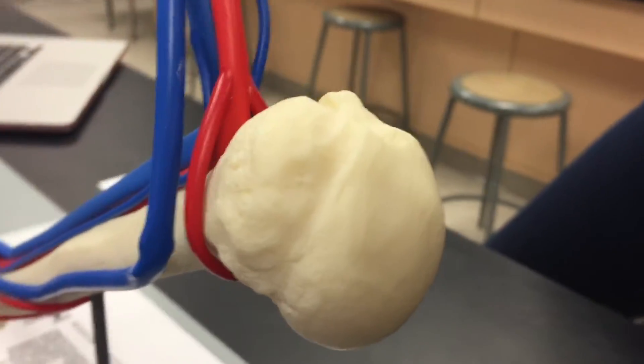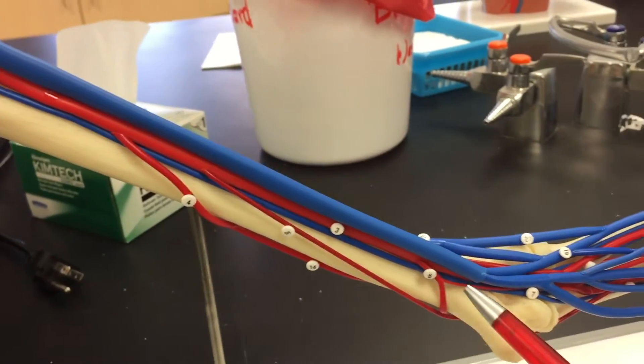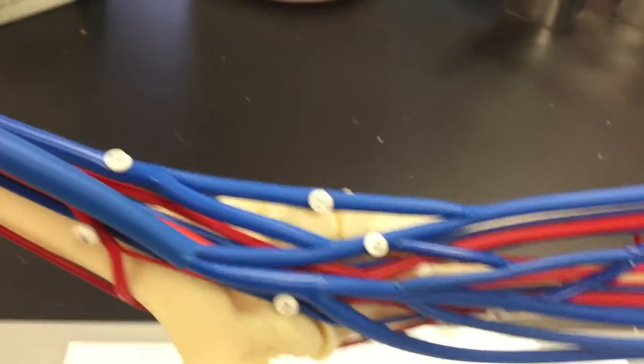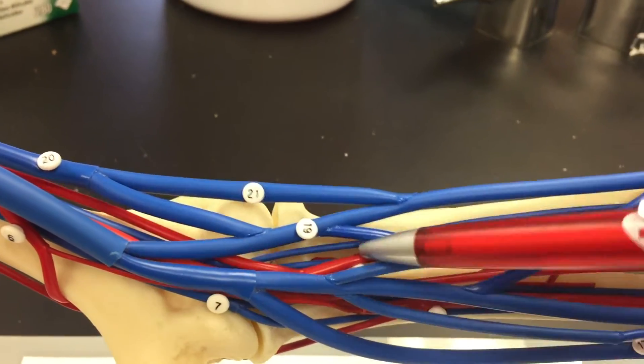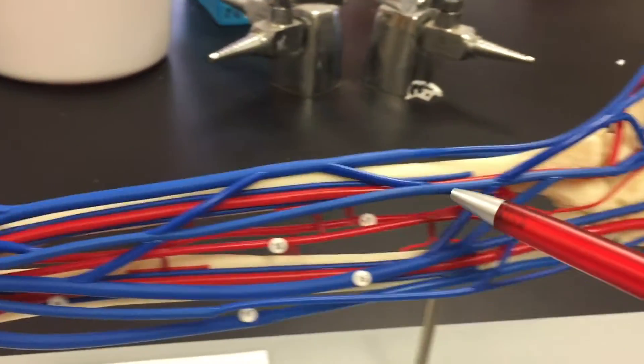...is the posterior circumflex humeral artery, number three. This whole long thing here is the brachial artery. Number eight follows along towards...